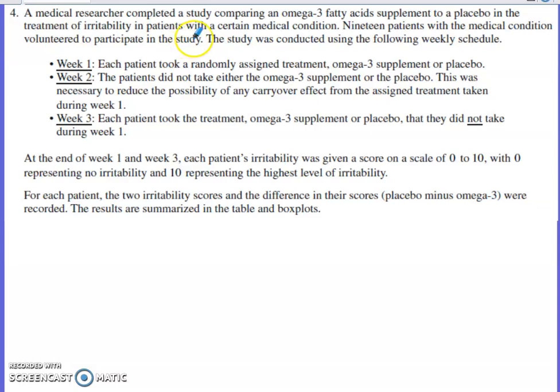A medical researcher completed a study comparing an omega-3 fatty acid supplement to a placebo in the treatment of irritability in patients with a certain condition. We've got 19 patients with the medical condition that volunteered to participate. The study was conducted using the following weekly schedule. During the first week, each patient is going to be randomly assigned either the placebo or the omega-3 supplement. Week two, they're not going to do anything because they want the effects of whatever was taken during week one to completely wear off.